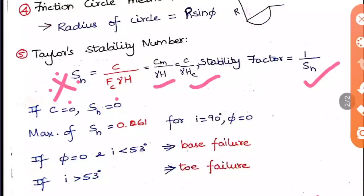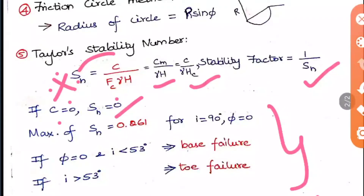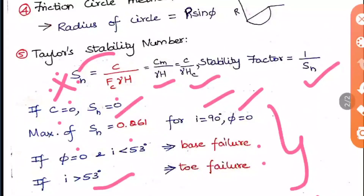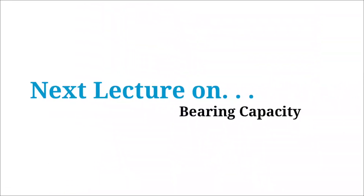Key conditions for Taylor's stability number: if c = 0, S_n = 0 automatically. The maximum value S_n can have is 0.261, which occurs when i = 90° and φ = 0. Regarding failure types in Taylor's method: when φ = 0 and i < 53°, base failure occurs; when i > 53°, toe failure occurs. These are important points to remember.